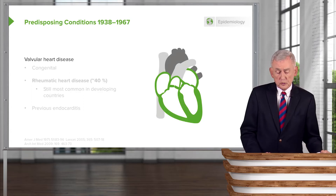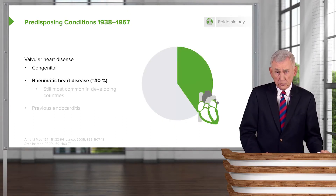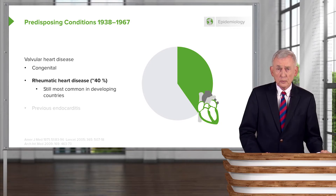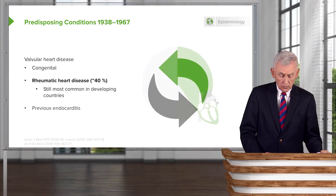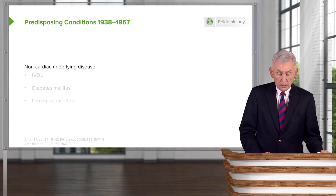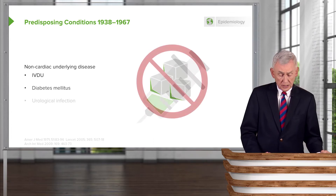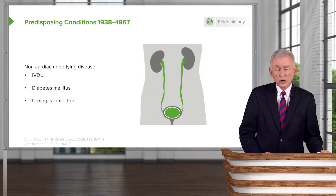The predisposing conditions between 1938 and 1967 were primarily valvular heart disease — that is congenital heart disease and rheumatic heart disease — which accounted for about 40% of the damaged valves leading to infective endocarditis. It's important to point out that this still is a very common predisposing factor in developing countries. Non-cardiac underlying disease was seen in IV drug users, diabetics, and patients with urological infections, usually those undergoing instrumentation.